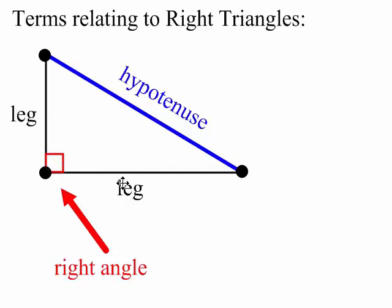So, legs—the hypotenuse is across from the right angle. The hypotenuse is always the longest side on a right triangle. Now, let's keep going here.